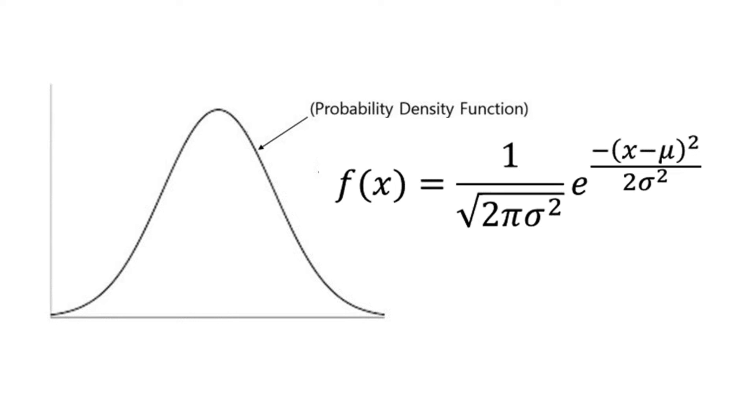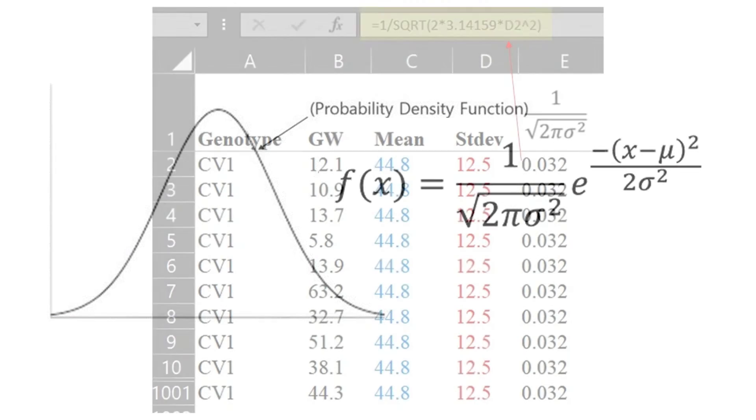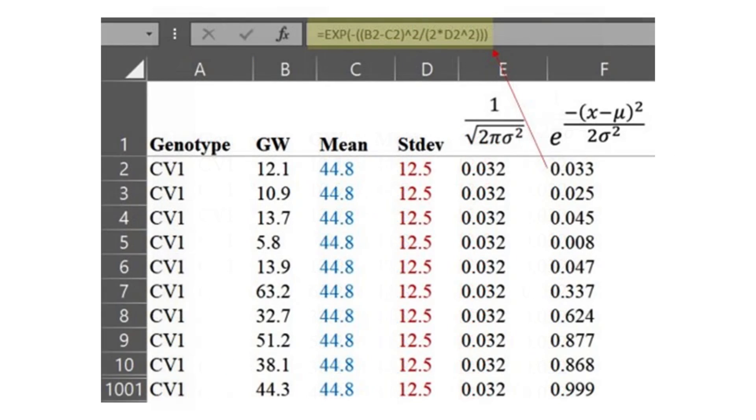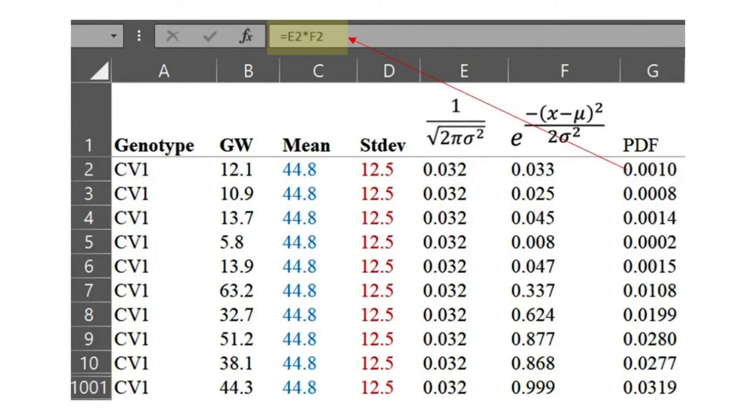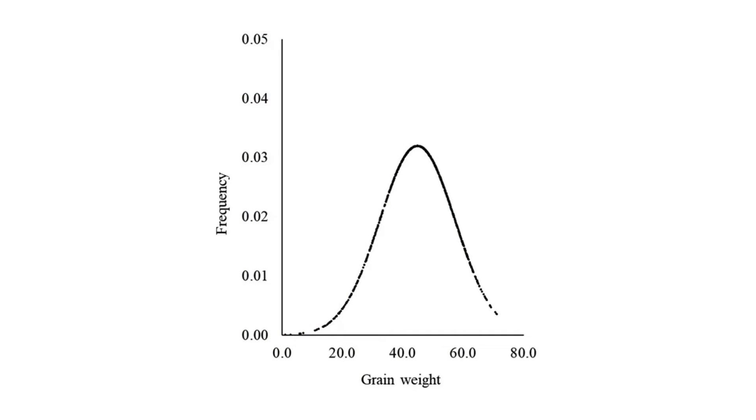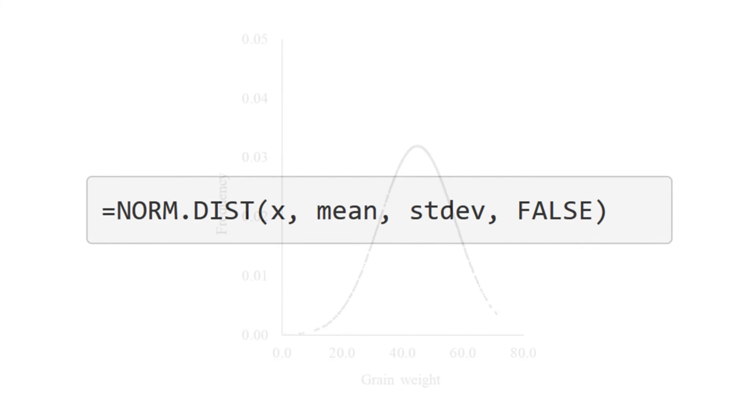Let's calculate step by step according to the formula. Then we can calculate PDF. We calculated probability density function. Now we can draw a normal distribution graph. Let's set up the GW column as x-axis and PDF column as y-axis, then select scatter graph. We drew a normal distribution graph about CV1.